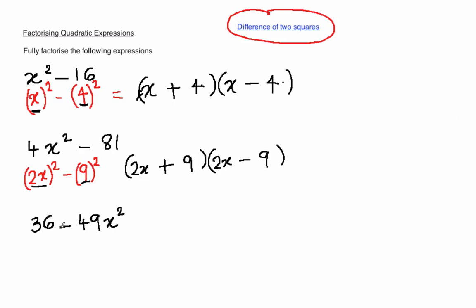Let's have a look at the final example which is slightly different. Here the number is written first and then the x squared is written after. 36 is the same as 6 all squared. Take away 49x squared is the same as 7x all squared. Because 7 times 7 gives you 49, x times x gives you x squared.